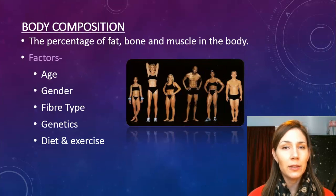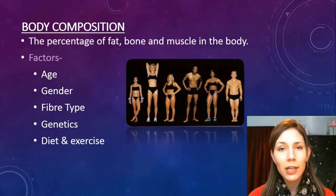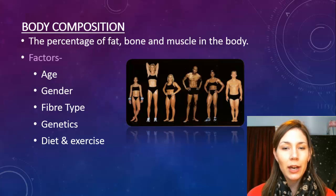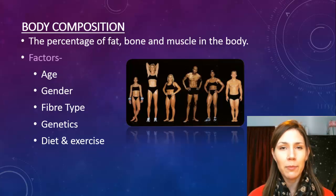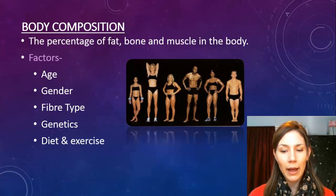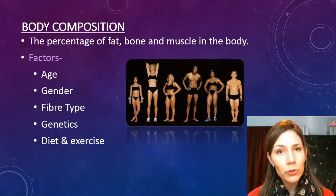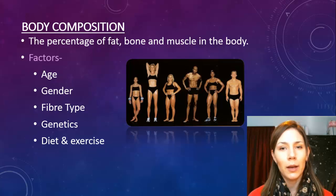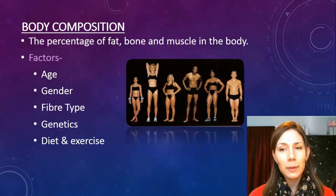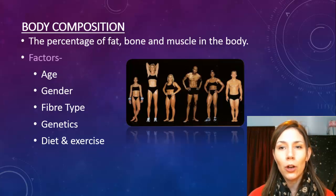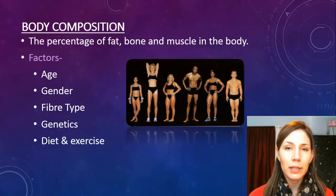Body composition is the percentage of fat, bone, and muscle in your body. There are different body types, which we call somatotypes — these fall along a continuum from basically skinny to fat. The really thin, lean people are considered ectomorphs. A muscly, stocky person is generally a mesomorph, and then you have rounded people who put on fat quite easily, who tend to be endomorphs. You can fall anywhere along that continuum; you don't have to be one particular body type — you can be a mix of two.